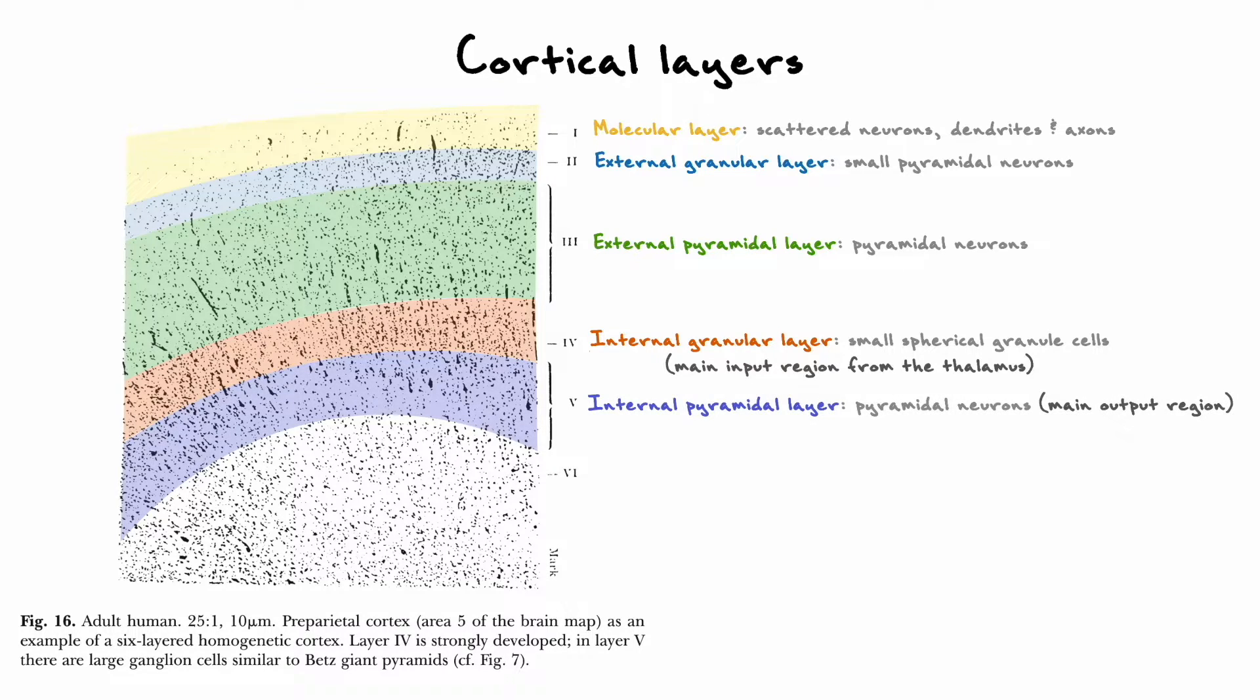The fifth layer, the internal pyramidal layer, also represents an important layer because it contains pyramidal neurons that constitute the main output pathway out of the neocortex. In regions that have very prominent layer 5s, like the primary motor area, the pyramidal neurons there can get very big.